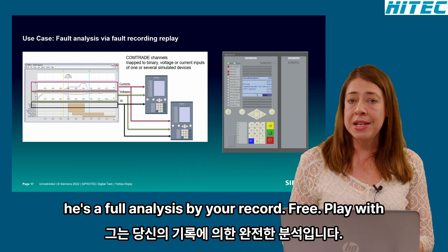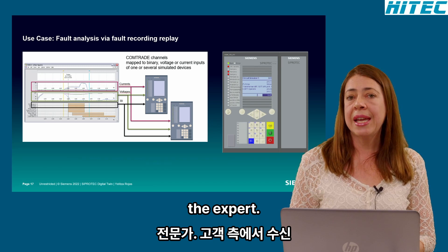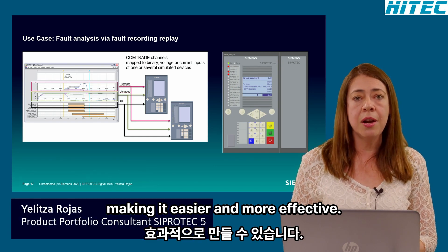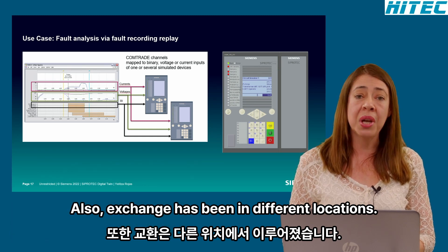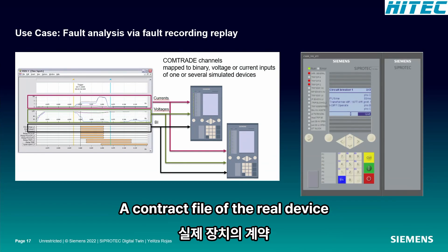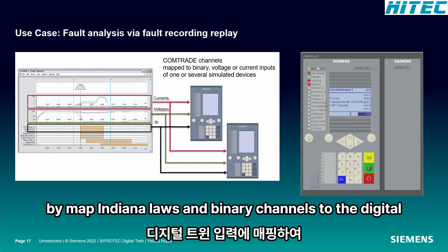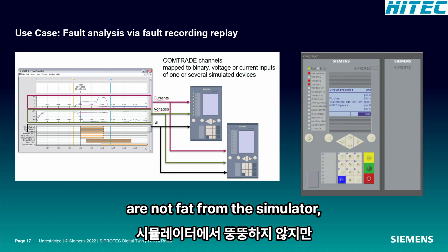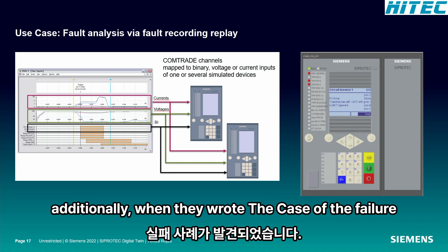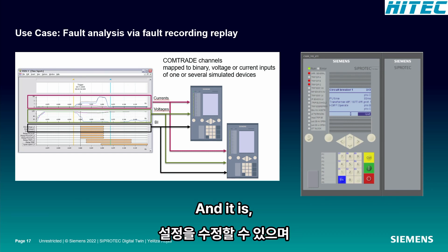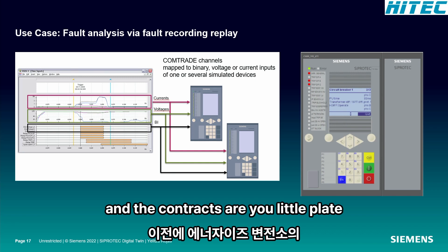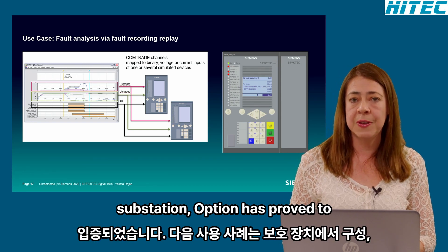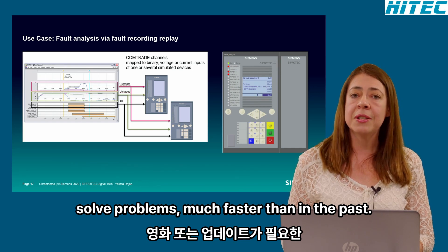The next case is fault analysis via record replay. With this option, the expert — either from customer or Siemens side — is able to see the response of the device, making the analysis easier and more effective. Two parties can also exchange findings in different locations far away from the installation. The Comtrade file of the real device is retrieved and replayed virtually by mapping the analog and binary channels to the digital twin inputs — the inputs are fed from the Comtrade, not from the simulator. Additionally, when the root cause of the failure is found and it is, for example, a wrong setting, this setting can be modified and the Comtrade can be replayed to verify the changes are satisfactory before updating the parameters in the energized substation.